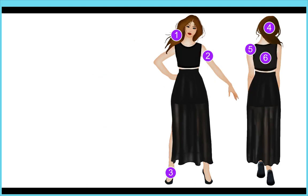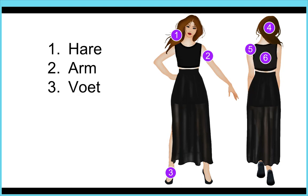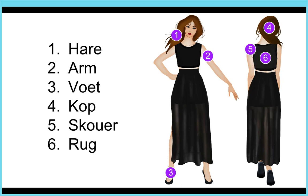Okay, let's have a look at your answers. Number 1: hare - hair. Number 2: arm - arm. Number 3: voet - foot. Number 4: kop - head. Number 5: skouer - shoulder. Number 6: rug - back.